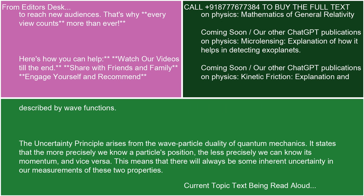The Uncertainty Principle arises from the wave-particle duality of quantum mechanics. It states that the more precisely we know a particle's position, the less precisely we can know its momentum, and vice versa. This means that there will always be some inherent uncertainty in our measurements of these two properties.